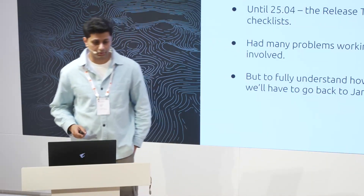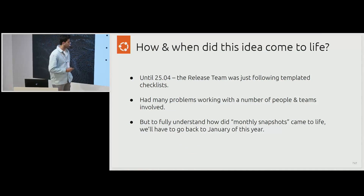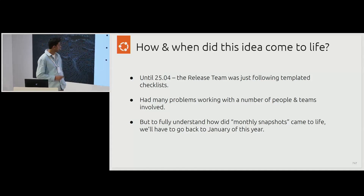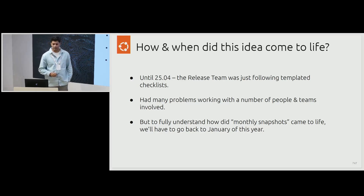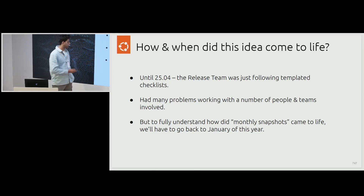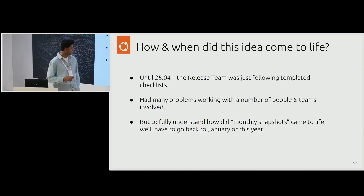Before we understand why we do it to ourselves, it's important to know how and when this idea came to life. Until 25.04, the release team was just following some template checklists which were often outdated and a lot of things were not how they were supposed to be in 2025. So we decided something needed to change, but we were only running the release process once a cycle, twice a year, so we did not have much time to improve or iterate on those processes. We've had a lot of problems working with so many people because release doesn't just involve five people in a room — it also involves the Ubuntu flavors, the community, Launchpad folks, the IS (the Canonical sysadmin team), and so many other people. If one thing slips, it creates a lot of problems for the release, and a lot of those processes are manual. So it really needed a change.